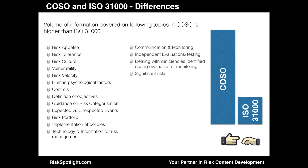The next slide highlights key topics where COSO documents have higher coverage than the ISO 31000 documents — higher coverage here refers to number of words used to explain the topic, not necessarily quality. While ISO 31000 defines the terms risk appetite, risk tolerance and vulnerability, these terms are not used within the guidance on framework and processes. On topics such as risk culture and human psychological factors to consider during risk assessment, COSO provides a lot more coverage. The concept of risk velocity is not even covered within ISO 31000. COSO also provides extensive coverage on defining and establishing controls compared to ISO 31000.